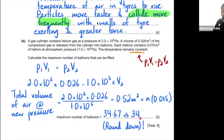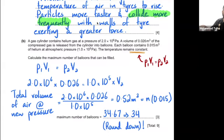The maximum number of balloons is 34, not 35. Since you can only fill whole balloons, you must round down, not round off. If the calculation gives 34.67, you can fill 34 complete balloons — the gas is insufficient to fully fill a 35th. Think of it like distributing 8 pizza slices among 9 people: each person can only get one whole slice.